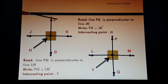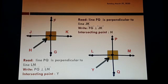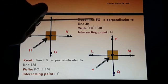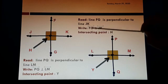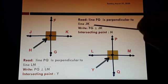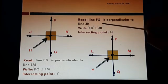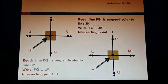One more example. FG is intersected by JK. Intersecting? Yes — at point H. Are they forming right angles? Yes, four right angles. Are they perpendicular lines? Yes. How to read: line FG is perpendicular to line JK. How to write with the line symbols and the perpendicular line symbol — this must be written between the two lines. So FG line is perpendicular to JK line. The intersecting point is H.